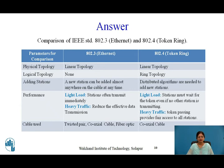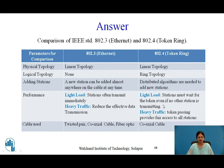Both 802.3 and 802.4 use linear bus topology physically, but 802.3 has no logical topology while 802.4 uses a logical ring. Adding a new station to 802.3 can be done almost anywhere on the cable at any time, but in 802.4 distributed algorithms are needed. For light load, 802.3 stations often transmit immediately but degrade under heavy traffic, whereas 802.4 under light load requires waiting for the token but provides fair access under heavy traffic. 802.3 uses twisted pair, coaxial, and fiber optics; 802.4 uses coaxial cable.